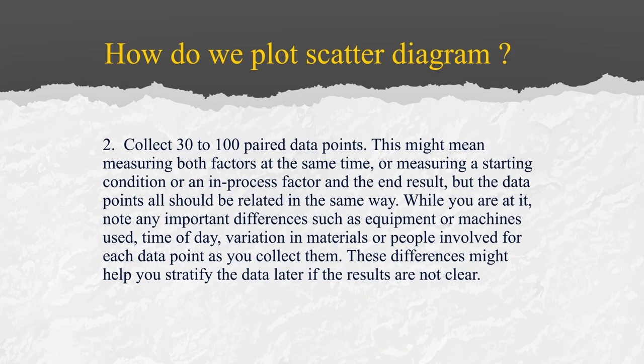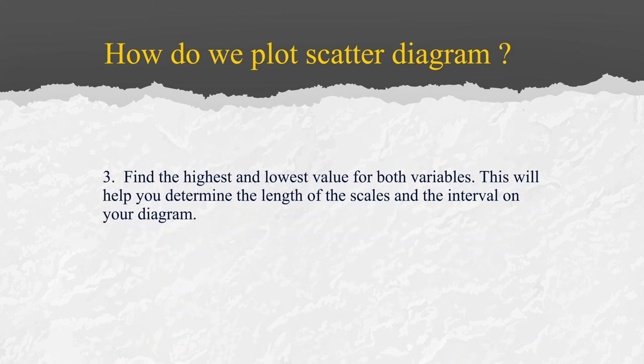We collect 30 to 100 pairs of data. This might mean measuring both factors at the same time, or measuring a starting condition or in-process factor and the end result. The data points should be related in the same way. These differences might help you to stratify the data later if results are not clear. Find the highest and lowest value for both variables to determine the length of the scales and interval of your diagram.